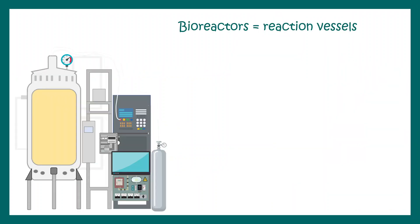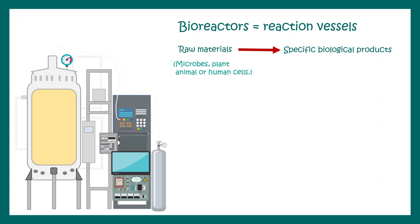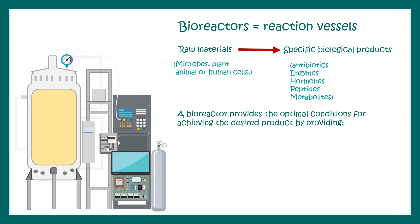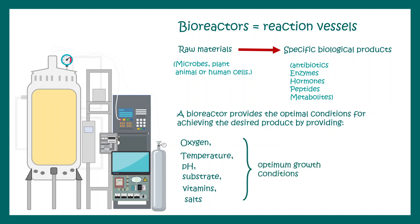Bioreactors are reaction vessels — that is totally clear to us by now. We also learned the difference between a simple stirred tank bioreactor versus a sparged stirred tank bioreactor. In a bioreactor, you put raw materials — which could be microbial cells, plant cells, animal cells, or even human cells — and they get converted to a specific biological product such as antibiotics, enzymes, hormones, peptides, or metabolites. A bioreactor provides optimal conditions for achieving the desired product by providing oxygen, temperature, pH, substrate, vitamins, and salts.